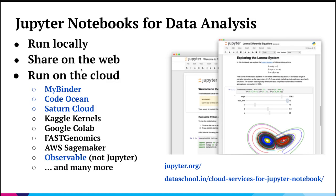The Jupyter platform has many strengths — you can run analysis locally, you can share that on the web, and you can even run it on the web using cloud platforms like MyBinder, CodeOcean, SaturnCloud, AWS SageMaker, Google Colab — there's a lot of options out there. We'll even be touching on a non-Jupyter cloud-based notebook environment called Observable at the end of the talk.